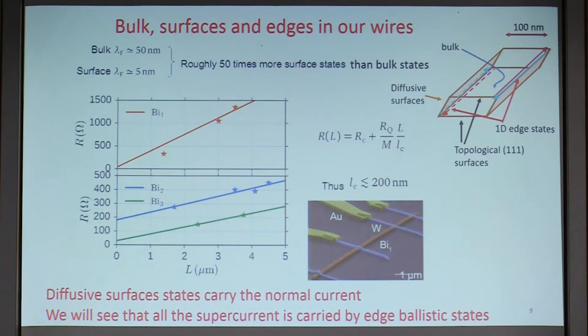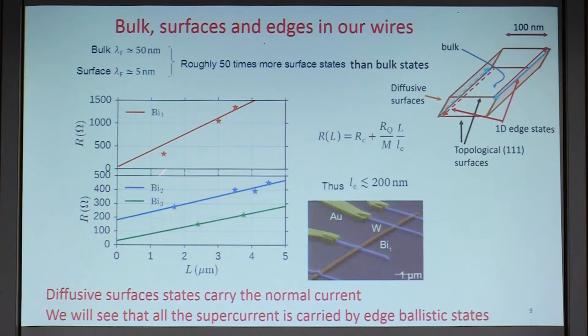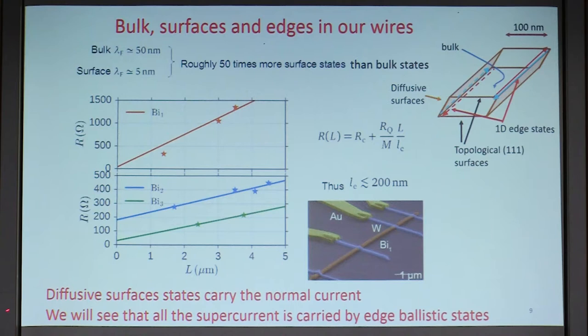If you characterize the normal state of this whole wire, you see diffusive behavior. Looking at resistance as a function of separation between contacts in the normal state, you see a linear behavior — this is diffusive transport across the wire in the normal state. So we have no states in the bulk, 1D edge states not yet revealed, and diffusive surfaces in the normal state. The diffusive surface states carry the normal current, and we will see that all the supercurrent is carried by the ballistic 1D edge states.